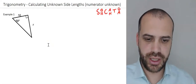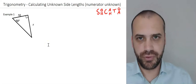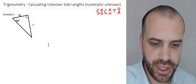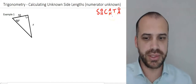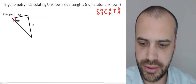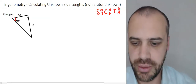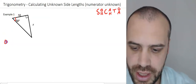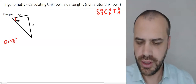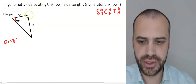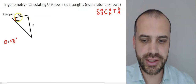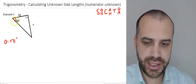Here's my first question. I've written SOHCAHTOA here because we're going to have to refer to that to figure out which trig ratio to use — there are three of them and only one will make sense in this question. So we have this angle here — that's our theta. I'm going to write this information down: theta equals 58. This is the hypotenuse because it's the longer side opposite the right angle.